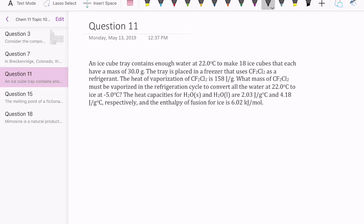Let's take a look at question 11 in topic set 10 in Chem 11. This is a question about converting a substance from different phases, like a phase diagram, as well as energy needed to convert a substance from one phase to another, say from solid to liquid or from solid to liquid to gas.